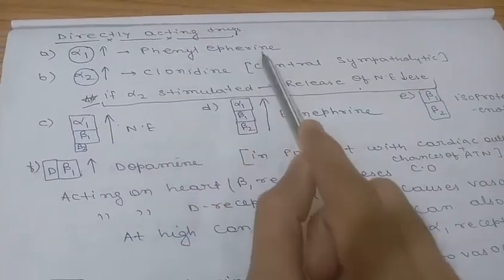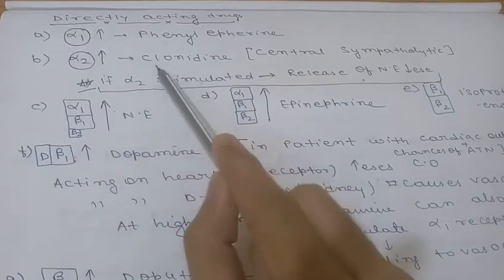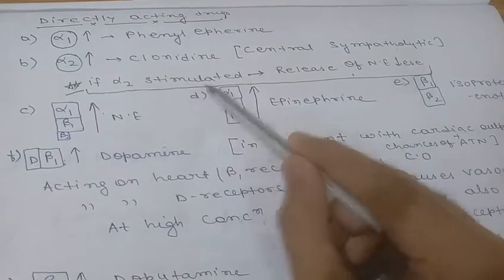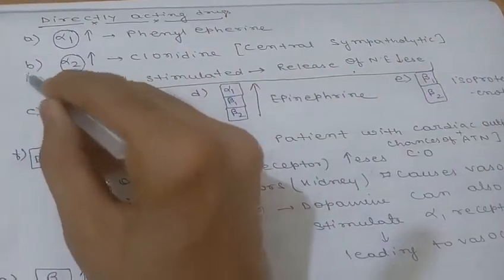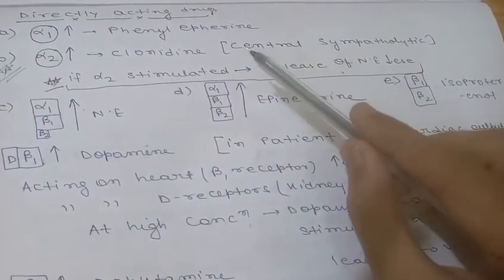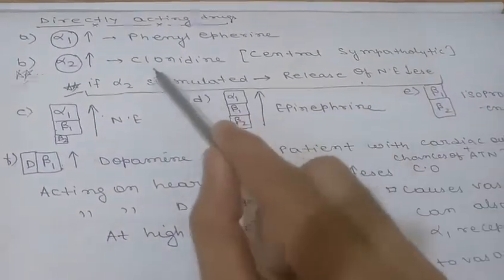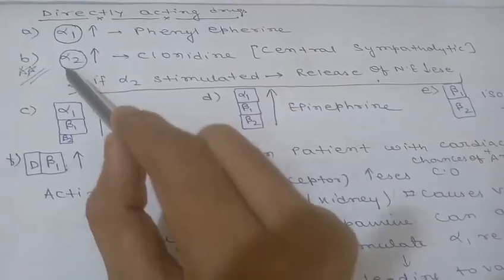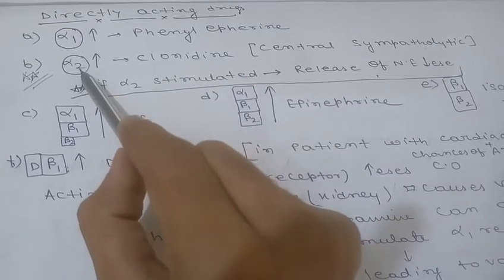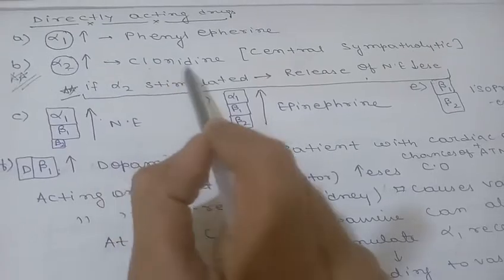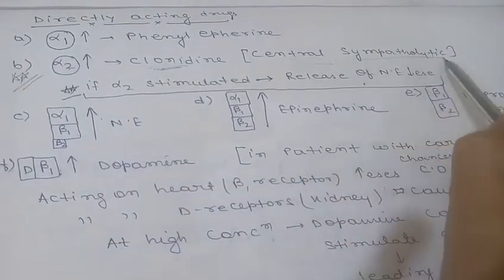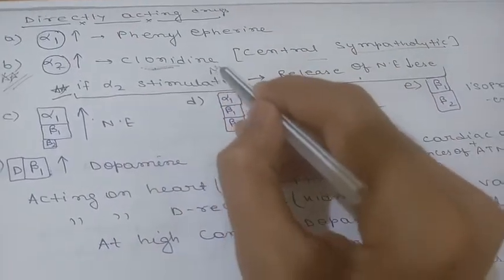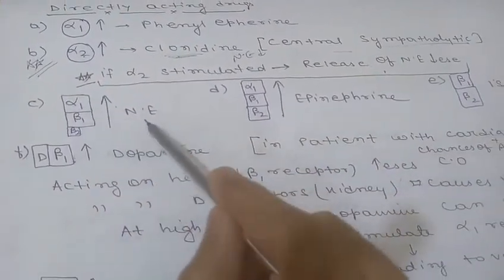Among directly acting drugs: phenylephrine increases alpha-1 activity. Clonidine is a central sympatholytic — it increases alpha-2 receptor activity, but since alpha-2 receptors are present on the presynaptic membrane, their activation leads to reduced norepinephrine secretion. So clonidine increases alpha-2 activity but indirectly decreases norepinephrine secretion, hence it is a central sympatholytic drug.